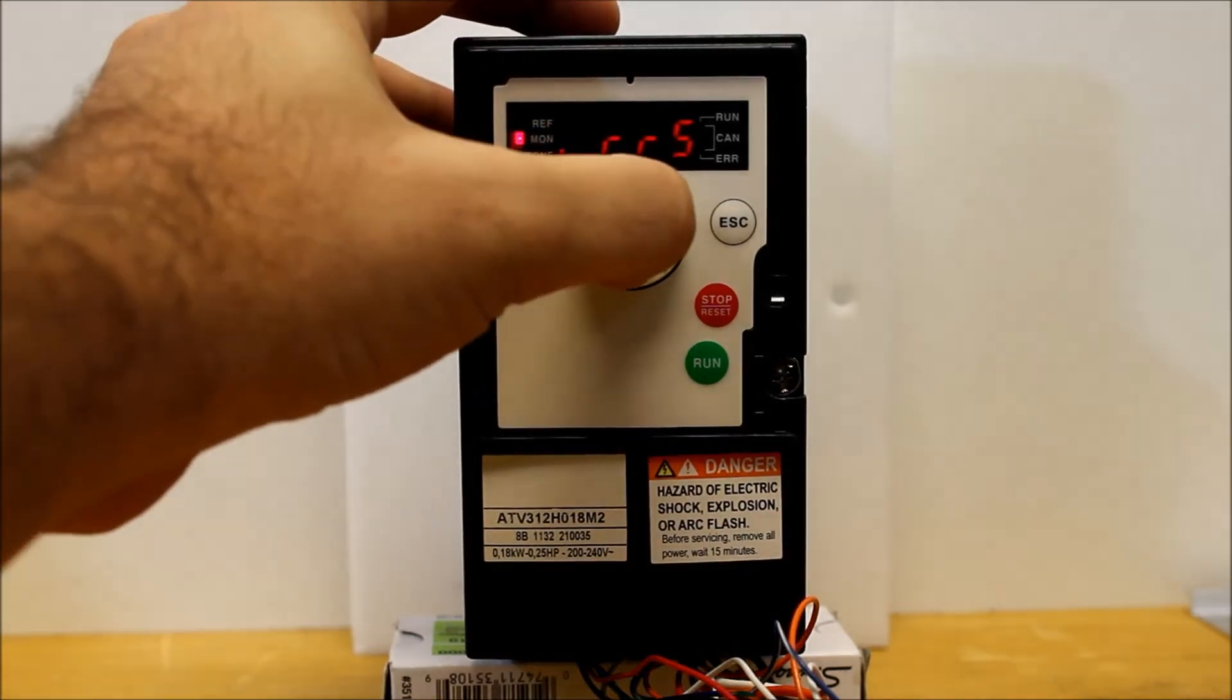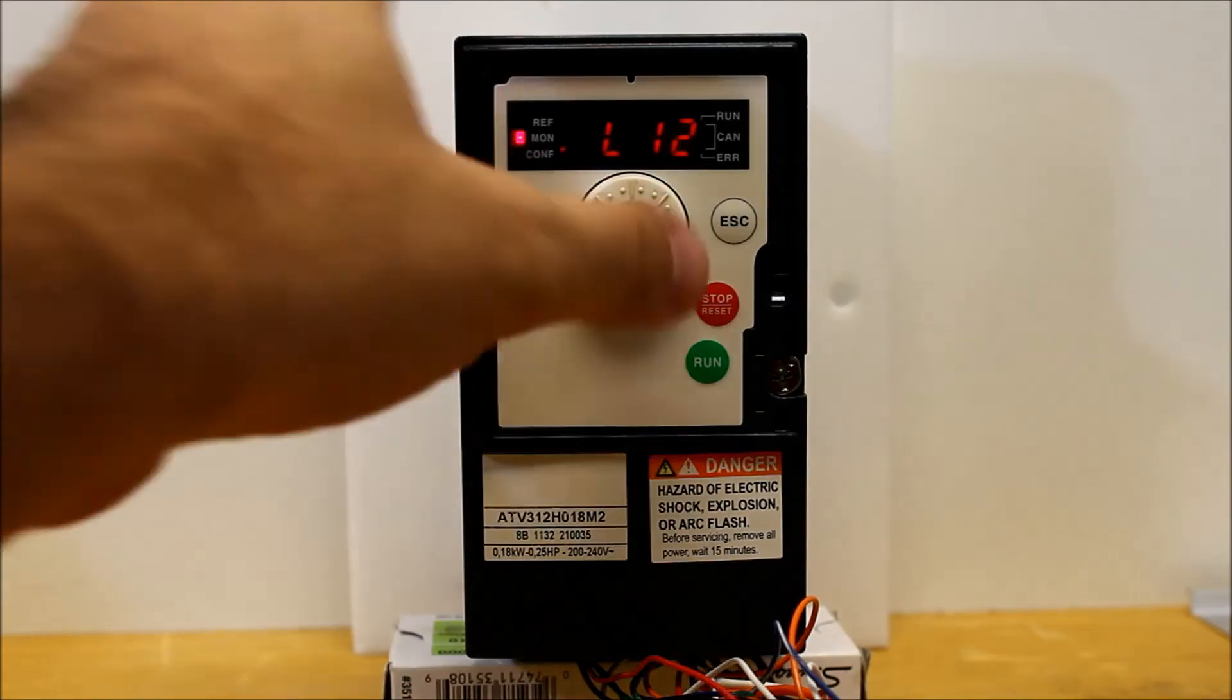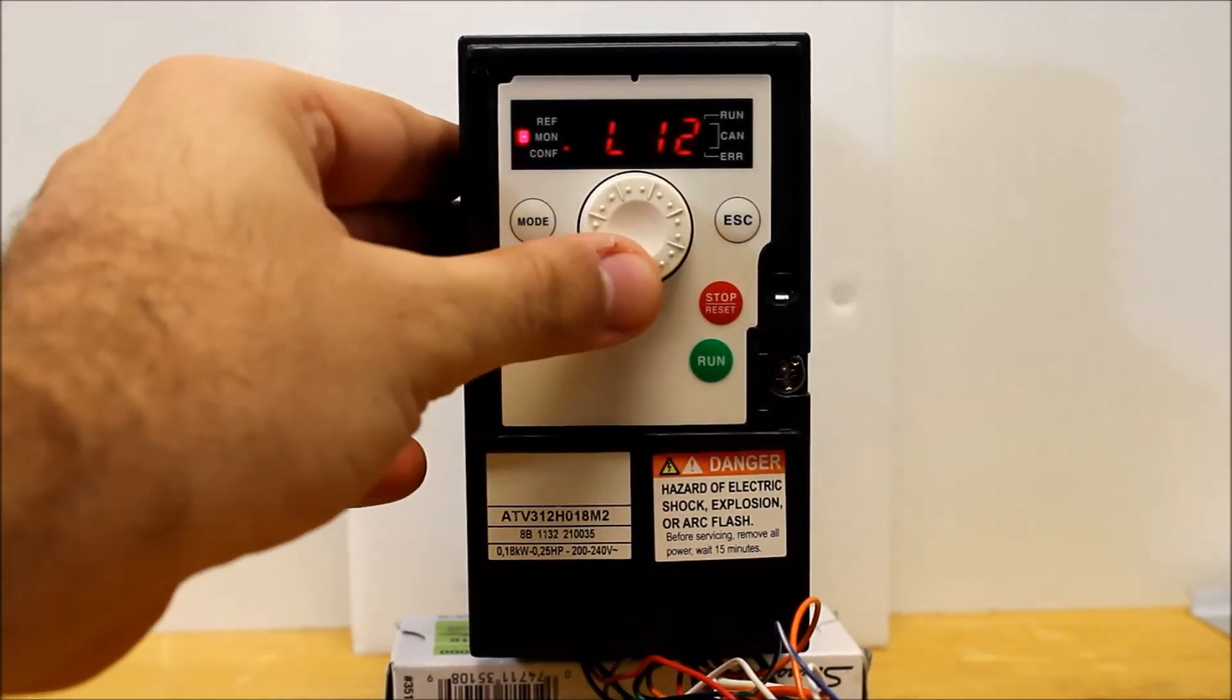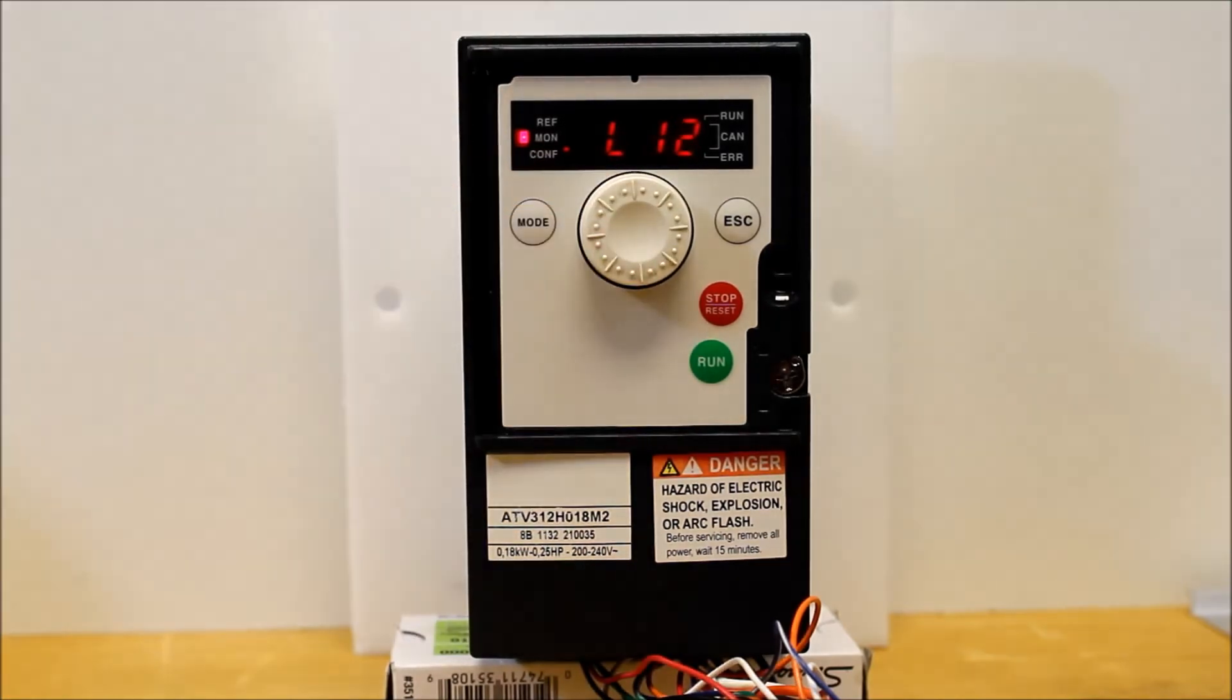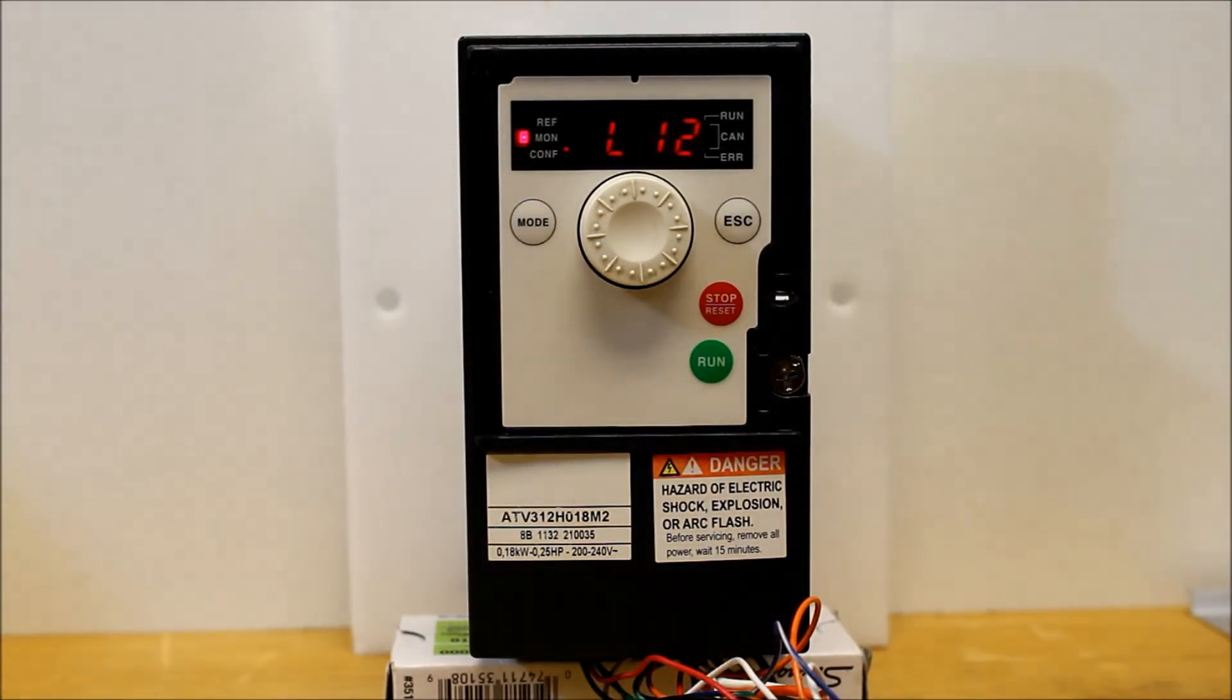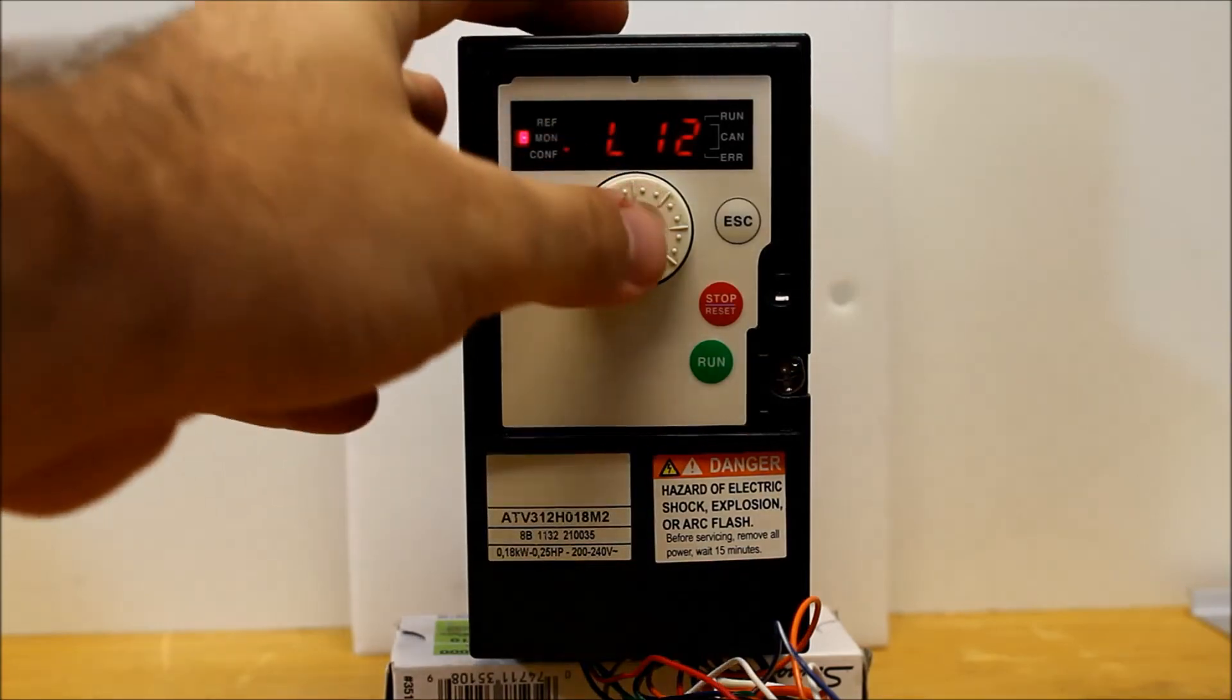Now, you may have this already programmed as some kind of logic input. It can be assigned to No., it can be assigned to 2, 3, 4, whatever you want. Let's just say we want to use the logic input 2 as reverse assignment. So once that's programmed, you enter on that.